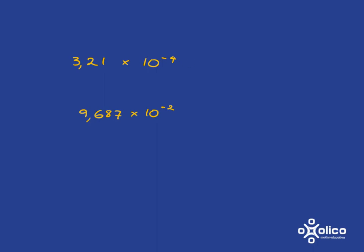How does that change things? Well, we know what a negative exponent means. This means 3.21 times 1 over 10 to the 4. And so actually what we have is 3.21 divided by 10 to the 4.